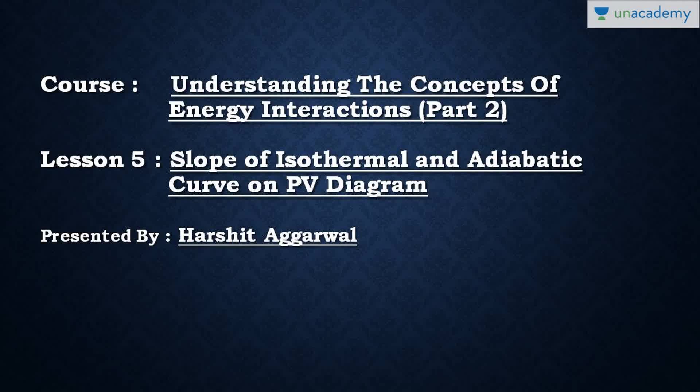Hello friends, this lesson is all about the slope of isothermal and adiabatic curves on a PV diagram. Students are often confused about how to draw the isothermal and adiabatic curves on a PV diagram, because the constant pressure line is a horizontal line and the constant volume line is a vertical line. The two more important lines are the isothermal and the adiabatic line, and we will see how to draw and represent these two lines on a PV diagram.